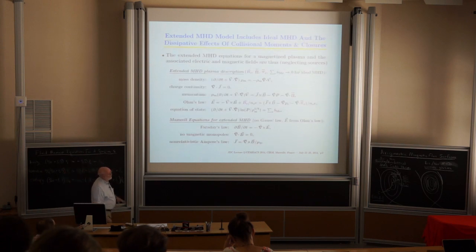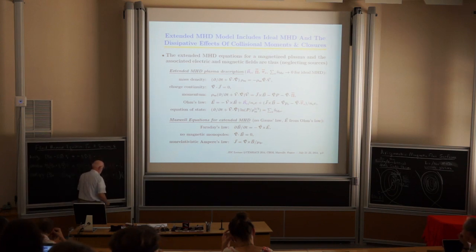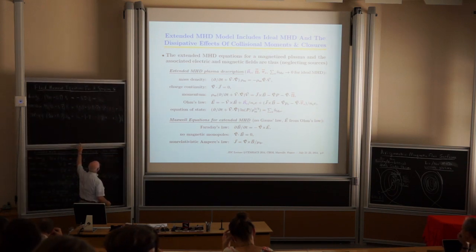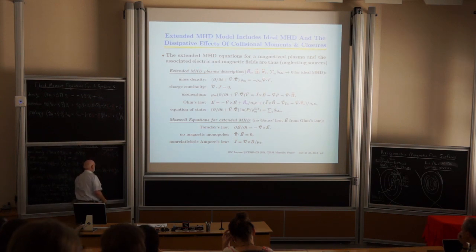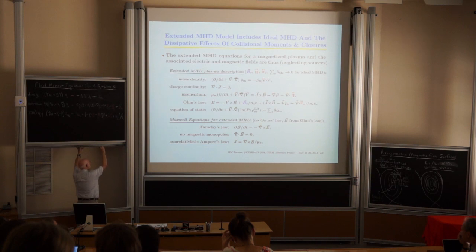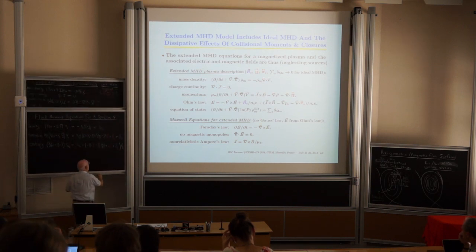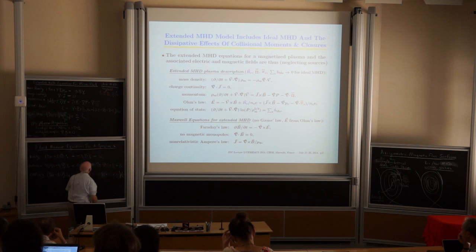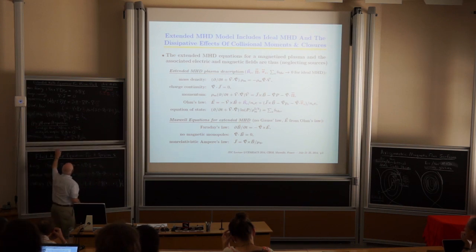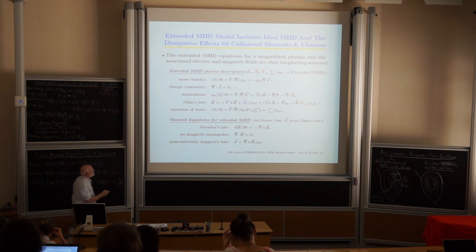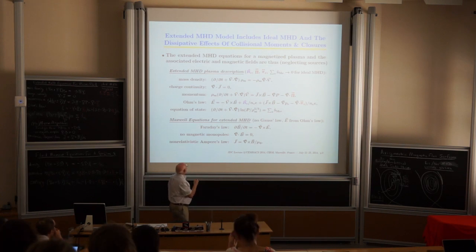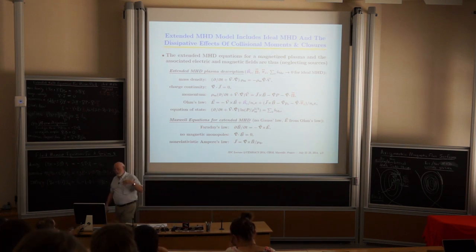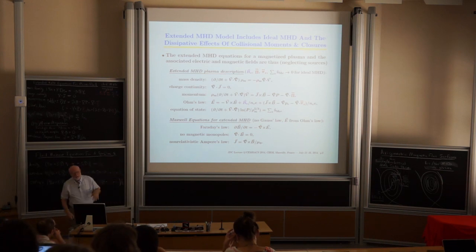When you sum up the two species, you end up with the extended MHD equations. For the mass density, you sum the electron and ion densities. If you multiply by charge instead of mass, you get the charge continuity equation: divergence J equals zero.